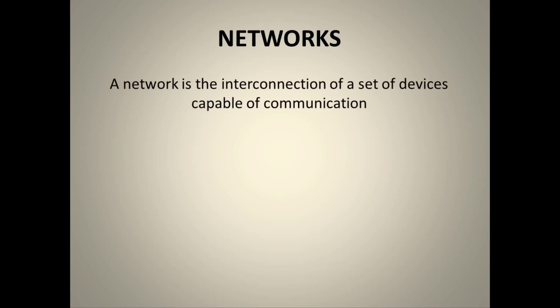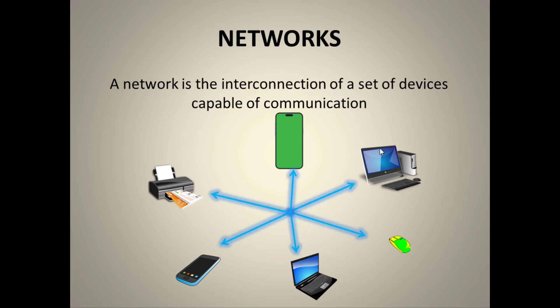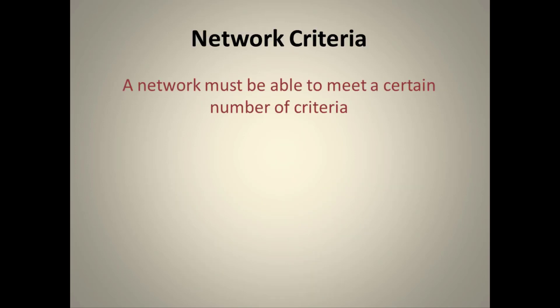A network is the interconnection of a set of devices capable of communication. Examples include mobile phones, laptops, smart machines, printers, and mice — all capable of sending and receiving data. There are some criteria which must be satisfied by a network.